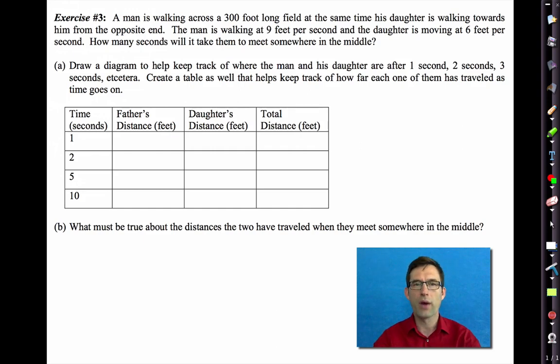We've got a man walking across a 300 foot long field at the same time that his daughter is walking towards him from the opposite end. So we got the two people walking towards each other. The man is walking at nine feet per second, so for every second that passes, he's going to travel nine feet. And the daughter is moving at six feet per second. What we want to determine is how many seconds it will take before they meet somewhere in the middle.